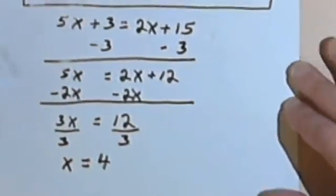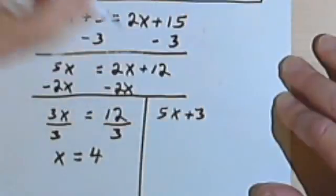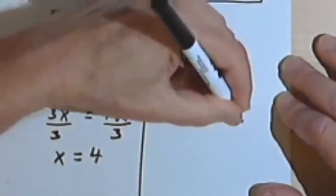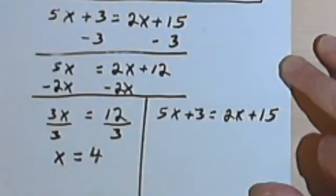We can check this. I'll rewrite the original problem, 5x plus 3 equals 2x plus 15, and then everywhere where there's an x I'll put in a 4.